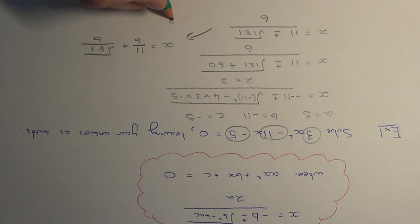That's one of our answers. The other answer will be when we have the negative in the middle: 11 over 6 minus root of 181 over 6.